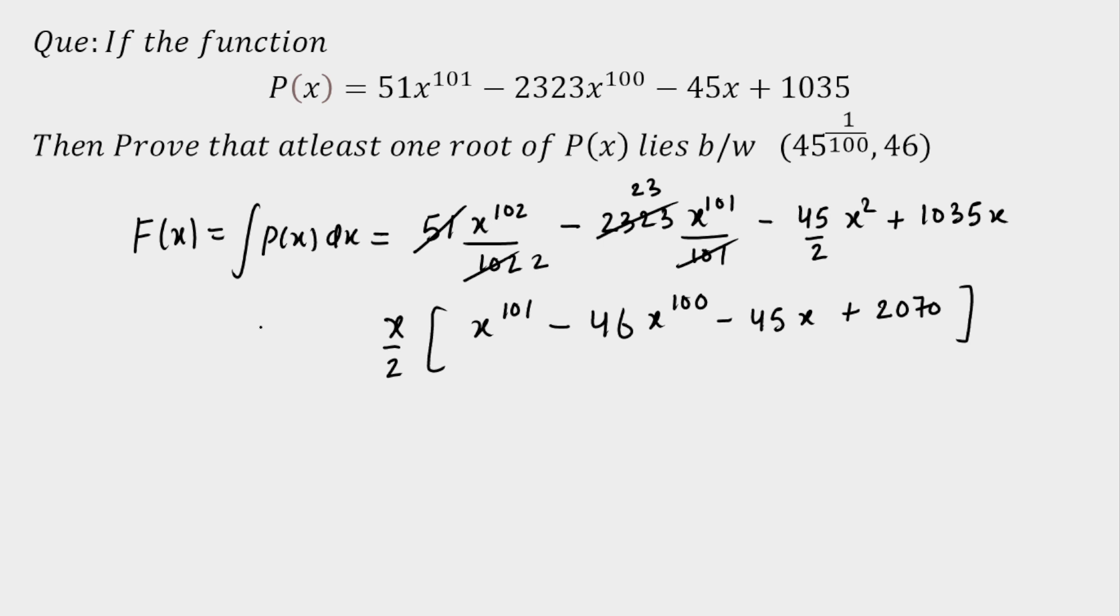Now further I am going to simplify this, so the capital F(x) is equal to this, and further I am going to simplify. So this is equal to x/2 times—now between these two terms I can take x^100 common, so remaining is x minus 46, and between these two terms I think you can take 45 common here, so the remaining is x minus 46 because 46 times 45 will be 2070.